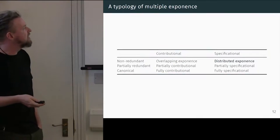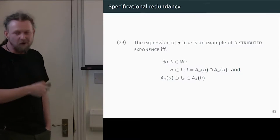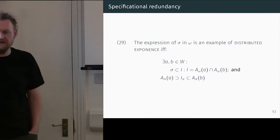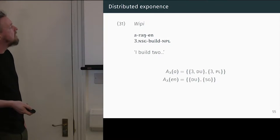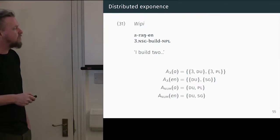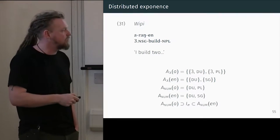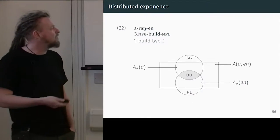Finally we have distributed exponents, which is multiple exponents except where the intersection of the A-Sigma relations is a proper subset of both. We go through the proof for our WIPI dual example. The prefix has A-Lambda of either third dual or third plural; the suffix is dual or singular. We generate the A-Sigmas: the prefix means either dual or plural; the suffix means either dual or singular. These then intersect at dual, whereas both of them also have an A-Sigma that's different. We can visualise that: the two types of redundancy are similar yet different.